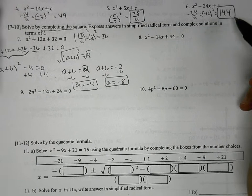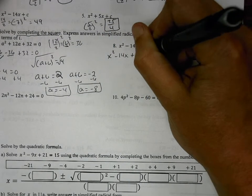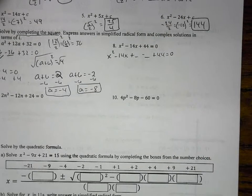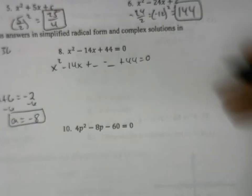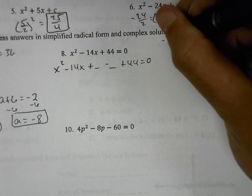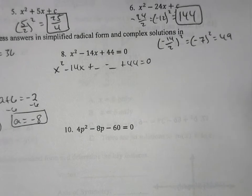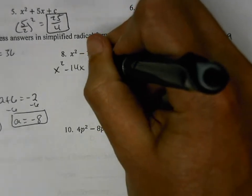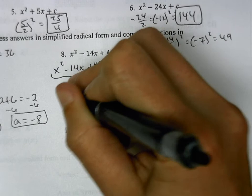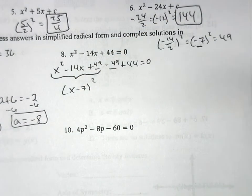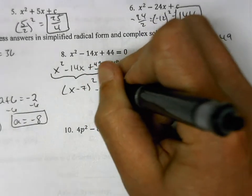Number 8 is the same kind of problem: x squared minus 14x plus blank minus blank plus 44 equals 0. To fill in the blank, do negative 14 divided by 2 and square it: that's negative 7 squared, which is 49. So 49 goes into both blanks. The first three terms factor into (x − 7) squared, and negative 49 plus 44 is negative 5, equals 0.